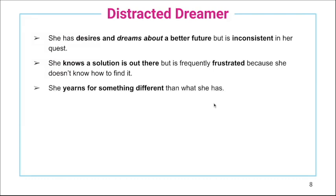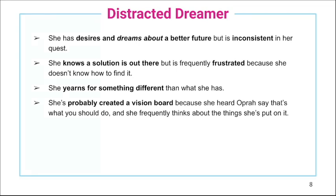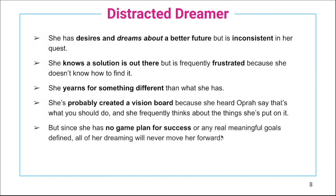The Distracted Dreamer is not taking action. She yearns for something different, but she's just daydreaming — looking out the window, lying in bed thinking about what dreams she wants but doesn't know how to get. She's probably created a vision board because she saw Oprah say that's what you should do. She thinks about it a lot, but she's not taking action. She has no game plan for success and no truly meaningful goals. If goals aren't coming from the heart and deeply aligned with who you're meant to be, they won't be achieved because you're not motivated by them. Her dreaming is not moving her forward.